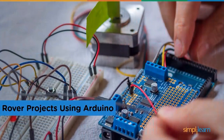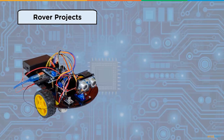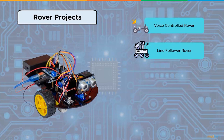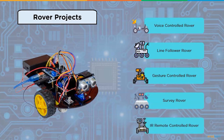Rover projects using Arduino: the Arduino robot is the world's first Arduino-powered vehicle. Each robot has two boards — the motor board controls the motors while the control board reads sensors and decides how to run them. Using Arduino we can create projects like voice control rover, line follower rover, gesture control rover, survey rover, IR remote controlled rover, and autonomous rover.